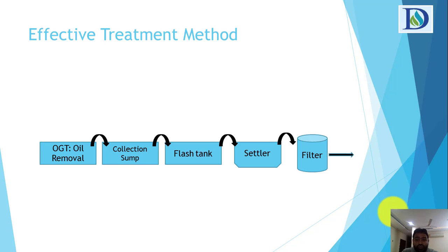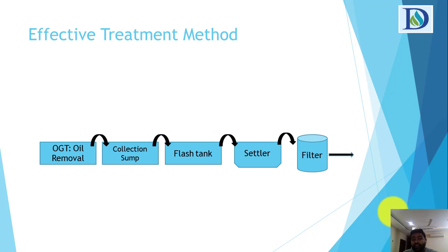The general treatment scheme for a restaurant kitchen first requires an oil removal system using an oil and grease trap. After the trap, wastewater goes to a collection sump, then to a flash tank where coagulation takes place with chemical addition, then to a settler for flocculation where sludge is removed, and finally through a carbon media filter.